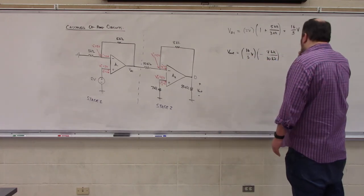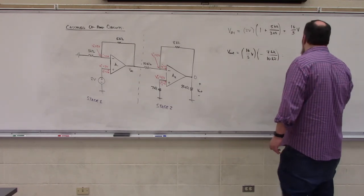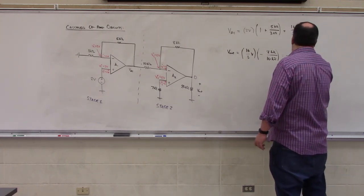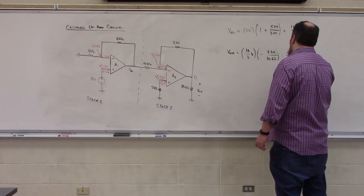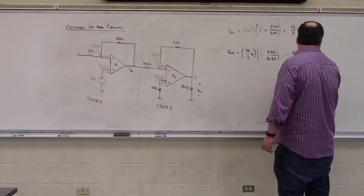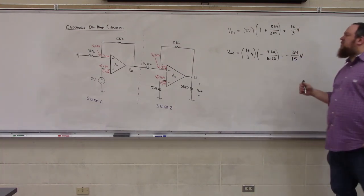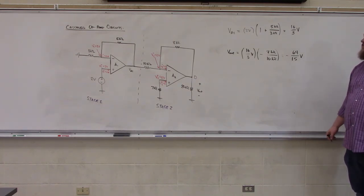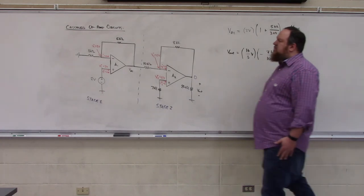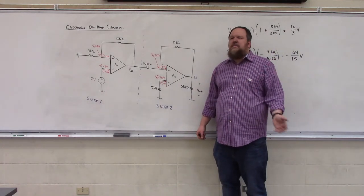So that is 64 times 2 is 128 divided by 30, negative 64 over 15 volts, which again agrees with our output voltage for our previous analysis. So we can choose to use either of these methods or actually mix and match.